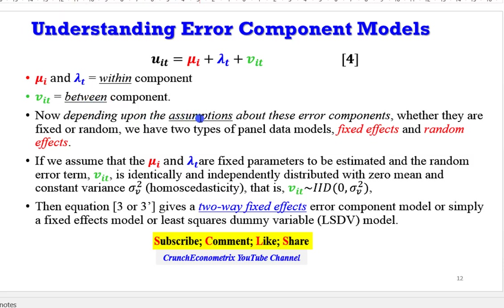Now, depending upon the assumption about these error components, we can have two types of panel data models, either fixed effects or random effects. So, if we assume that the individual and time differences are fixed parameters to be estimated, and the random error term is distributed with a zero mean and a constant variance, then we have a two-way fixed effect, or a simple least squares dummy variable model, given the assumptions that we have made.